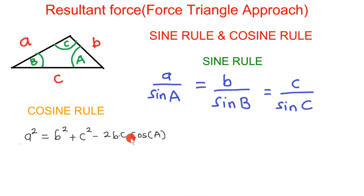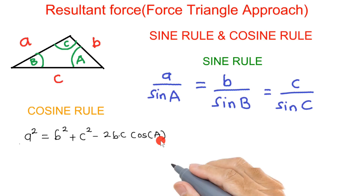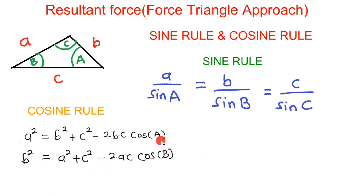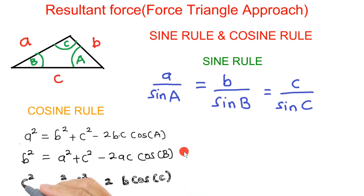If you don't use the sine rule, we can use the cosine rule. The cosine rule states: to calculate for side a, use a² = b² + c² − 2bc·cos(A). Similarly, for side b: b² = a² + c² − 2ac·cos(B). And for side c: c² = a² + b² − 2ab·cos(C). These are the two rules we can apply to calculate unknown sides or angles of a triangle.